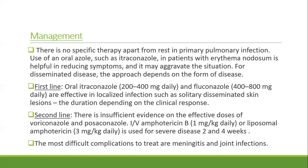There is no specific therapy apart from rest in primary pulmonary infection. Oral azoles like itraconazole in patients with erythema nodosum are helpful in reducing symptoms. For disseminated disease, first-line treatment is oral itraconazole 200 to 400 mg daily or fluconazole 400 to 800 mg daily, effective in localized infections such as solitary disseminated skin lesions, with duration depending on clinical response. Second-line options include voriconazole or posaconazole, or intravenous amphotericin B 1 mg/kg/day, or liposomal amphotericin B 3 mg/kg/day, used in severe disease. The most difficult complications are meningitis and joint infection.